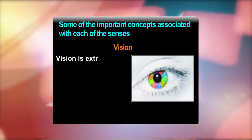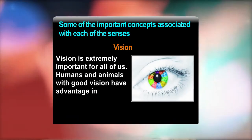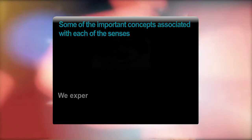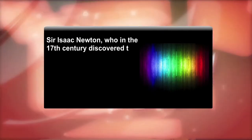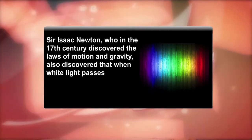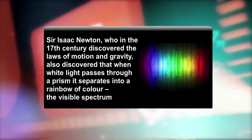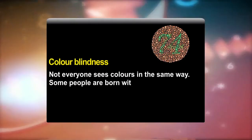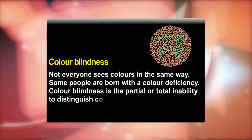Vision is extremely important for all of us. Humans and animals with good vision have an advantage in each and everything in life. We experience vision with the help of our eyes which function like a camera. Sir Isaac Newton, who in the 17th century discovered the laws of motion and gravity, also discovered that when white light passes through a prism it separates into a rainbow of color — the visible spectrum. Color blindness is the partial or total inability to distinguish colors, and most color blind people have trouble distinguishing red from green.